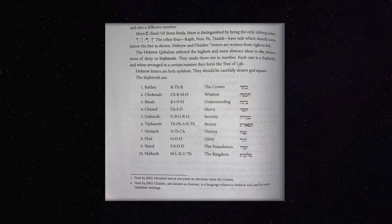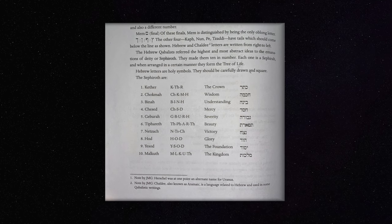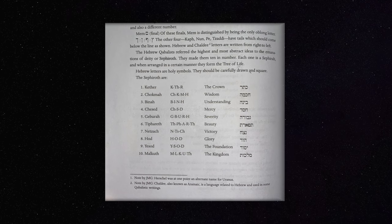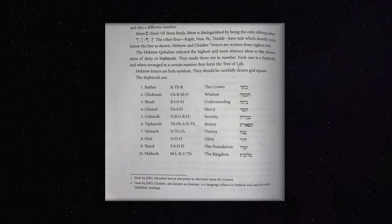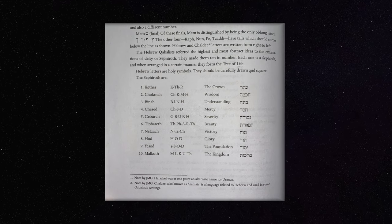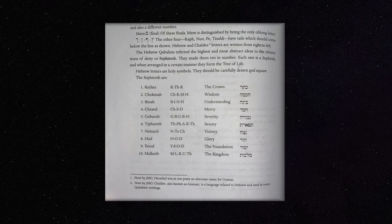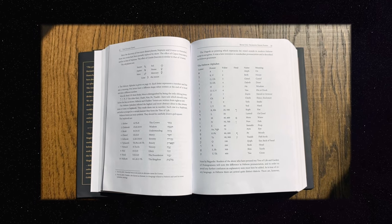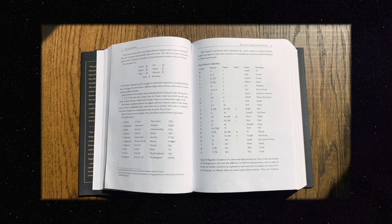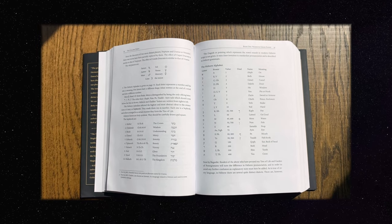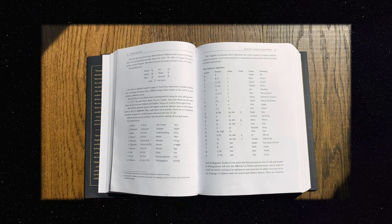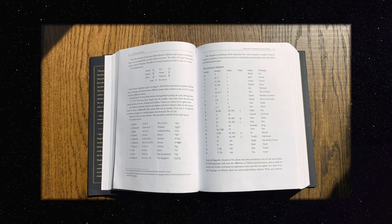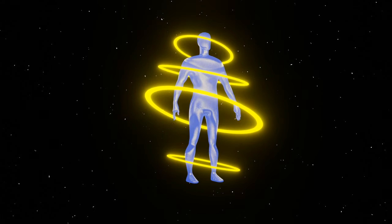Note by JMG: Herschel was at one point an alternate name for Uranus. Note by JMG: Chaldi, also known as Aramaic, is a language related to Hebrew and used in some Kabbalistic writings. The dagesh, or pointing, which represents the vowel sounds in modern Hebrew script, is not given. It was a later invention to standardize pronunciation and is described in Hebrew grammars.